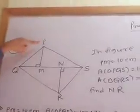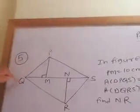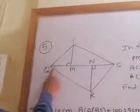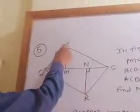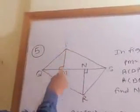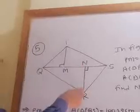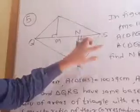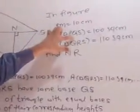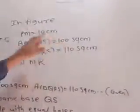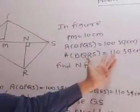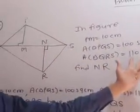Question number 5. Triangle PQS and triangle QRS both have the same base QS. Triangle PQS has height PM and triangle QRS has height RN. PM equals 10 cm. Area of triangle PQS equals 100 square cm. Area of triangle QRS equals 110 square cm.